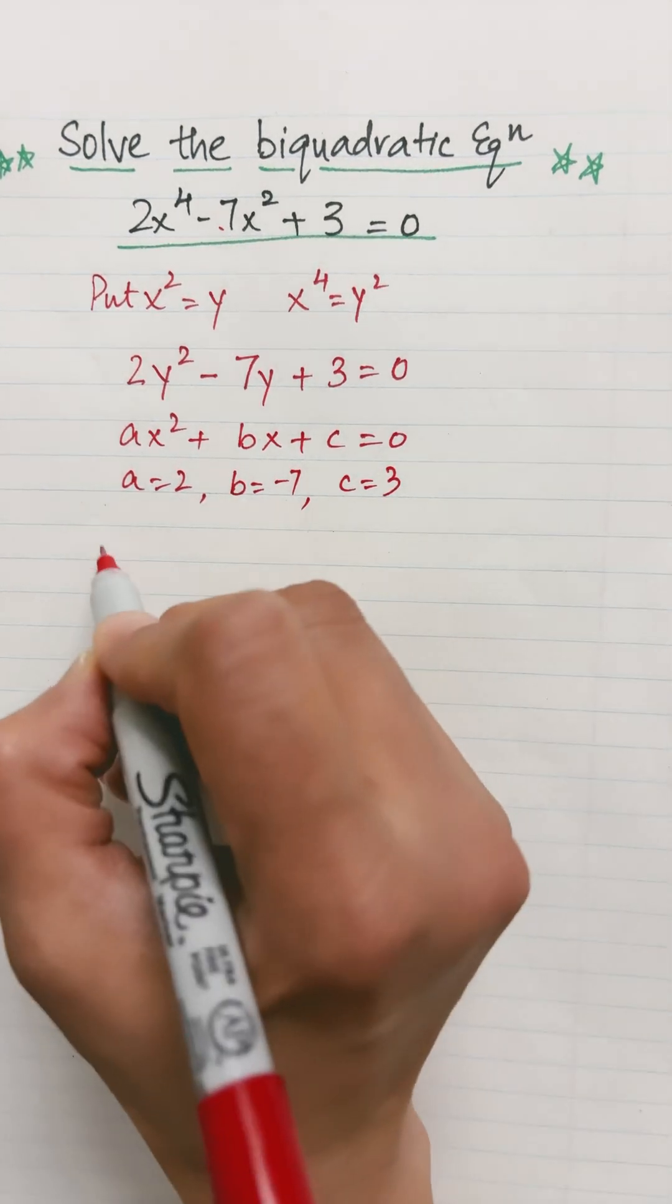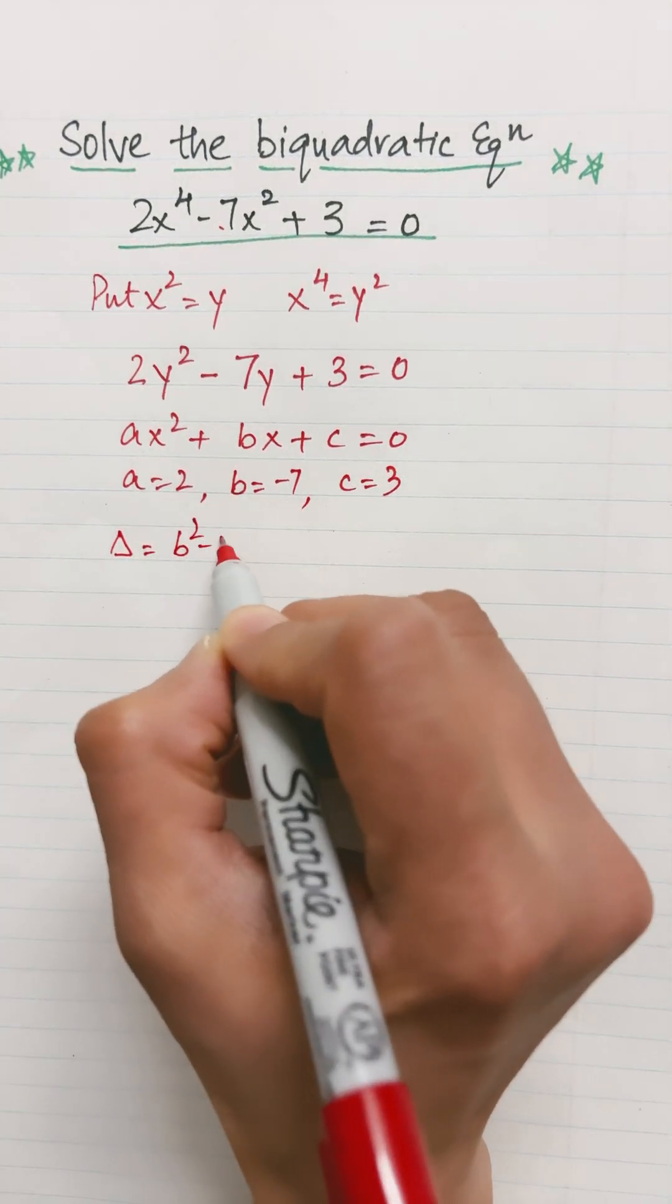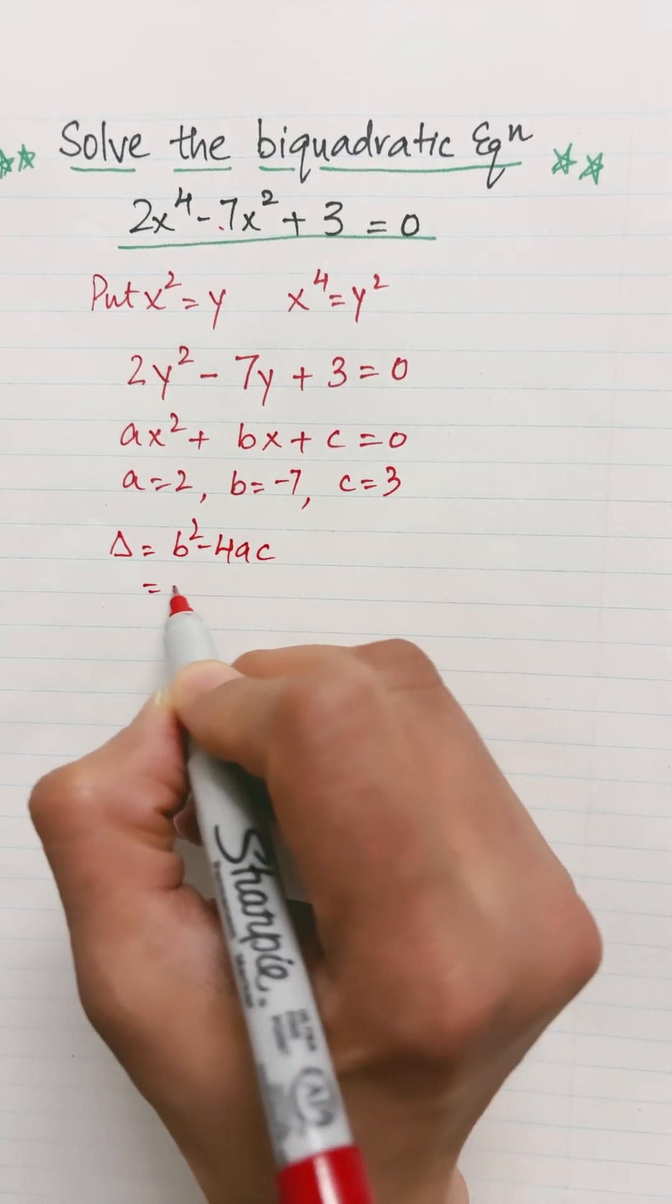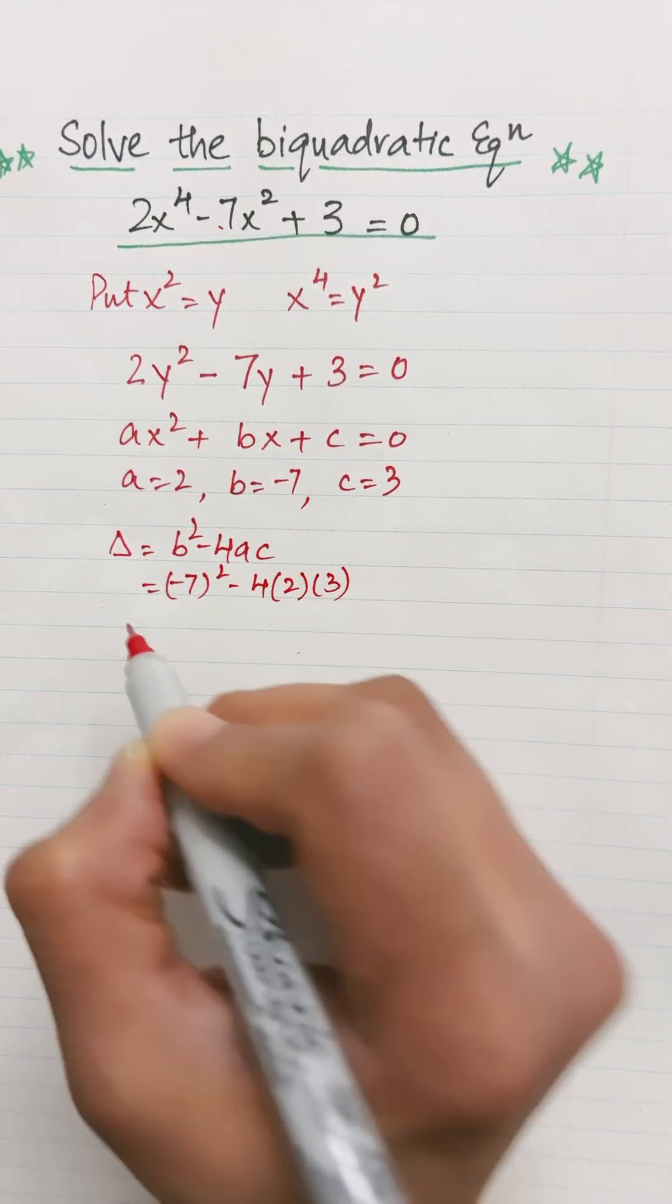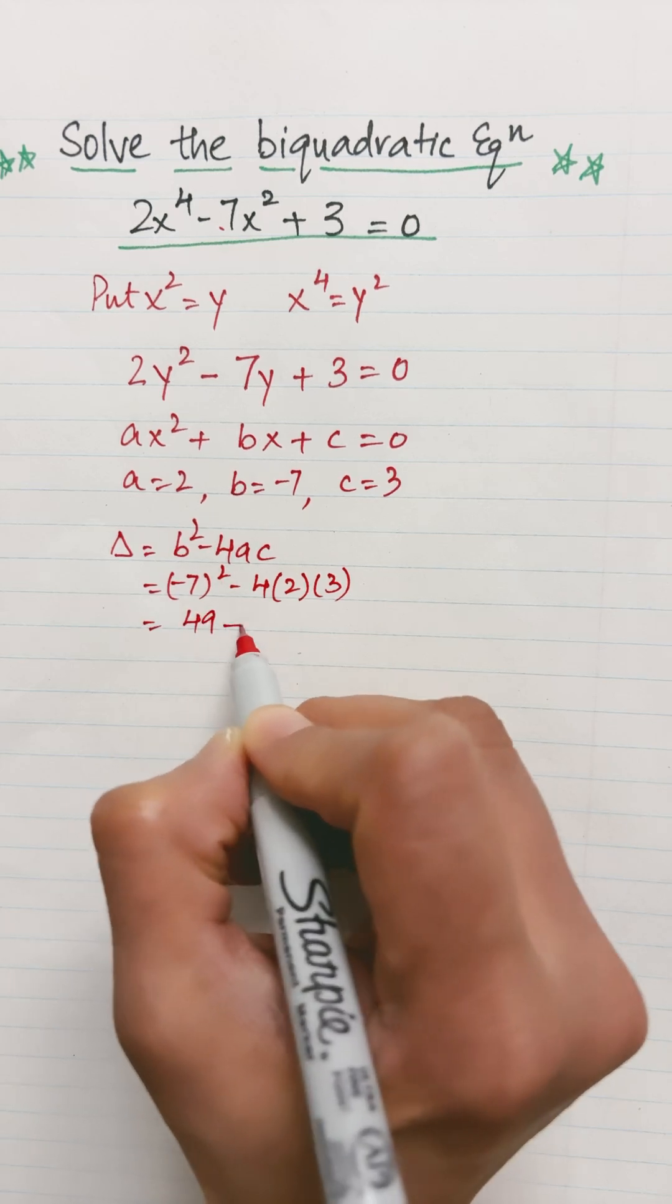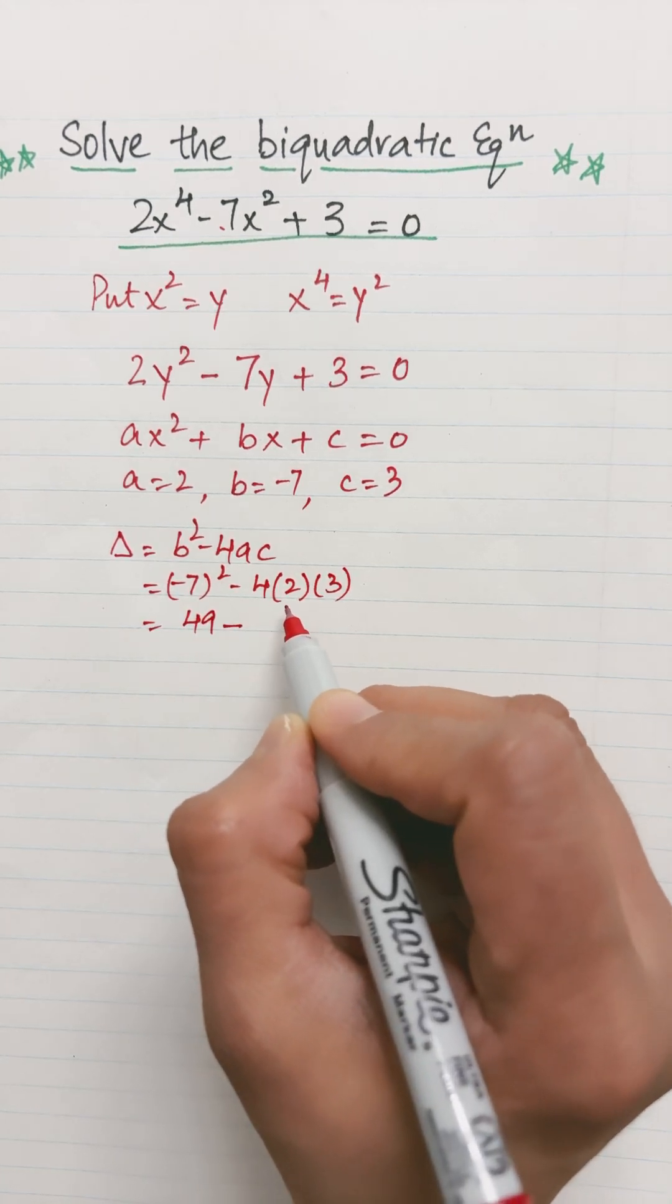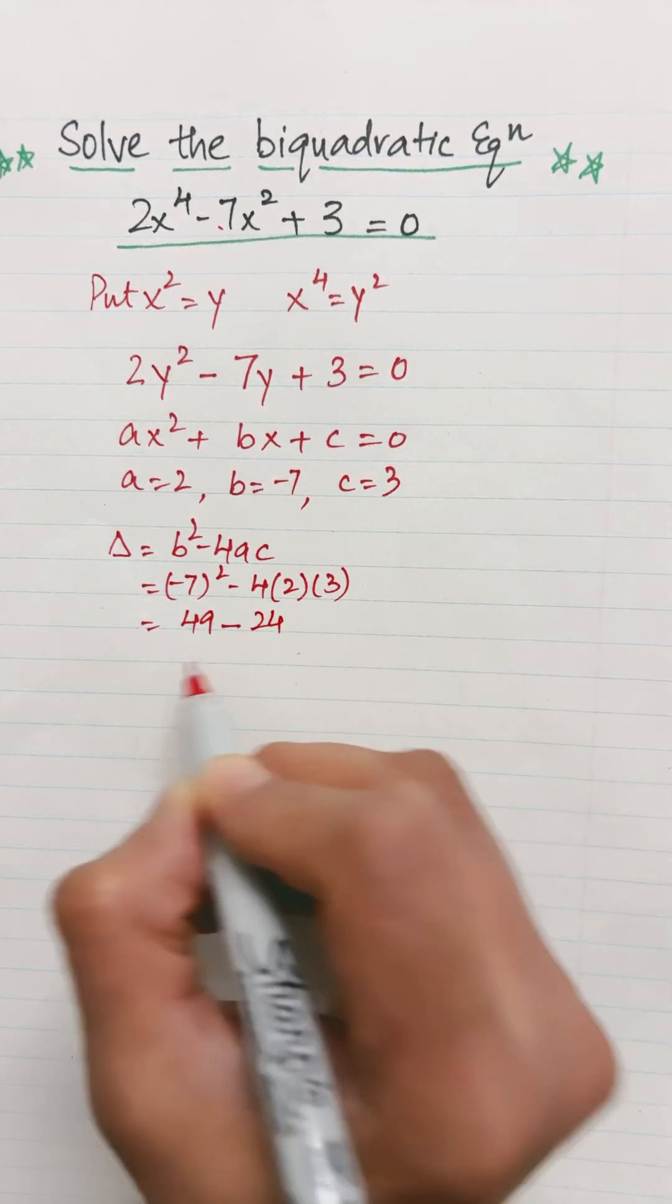The discriminant is b squared minus 4ac, which is equal to negative 7 squared minus 4 times 2 times 3. It's 49 minus 4 times 2, 8, times 3, 24. 49 minus 24...